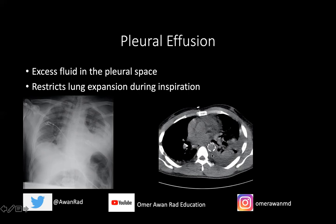On the CT, you have this meniscus-shaped or comma-shaped fluid layering dependently. This is a nice example of what a left pleural effusion looks like on CT. Notice it's darker — hypodense — compared to the surrounding visualized musculature. This is a nice example of what a left pleural effusion would look like.